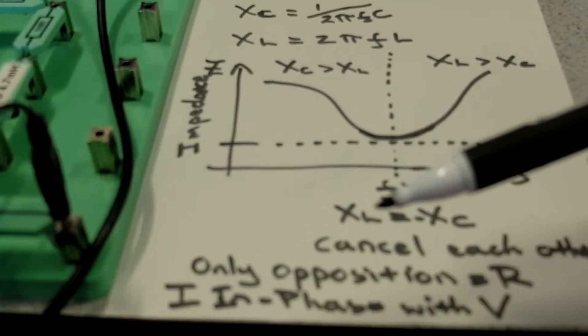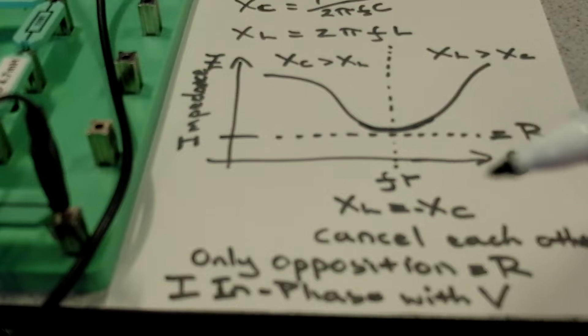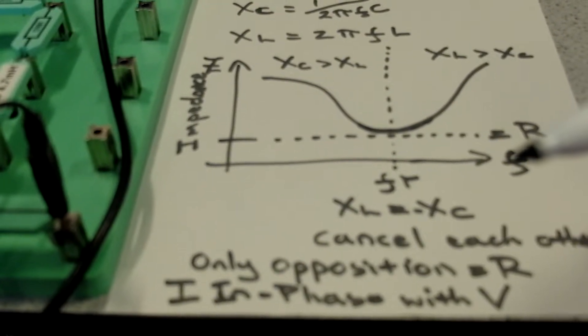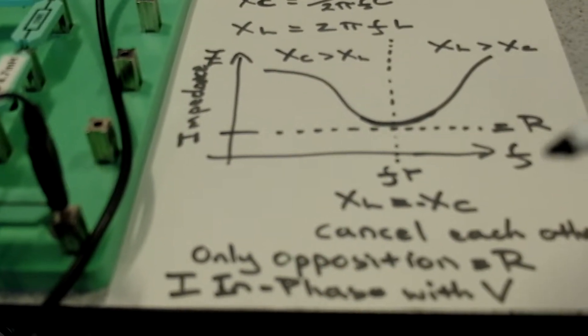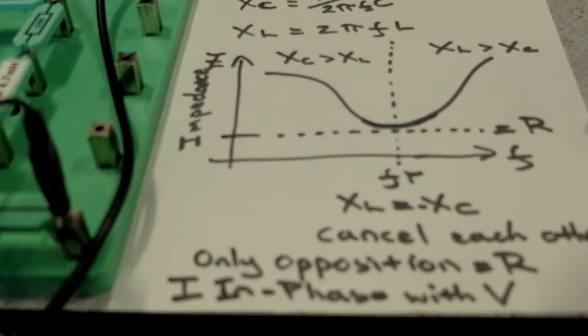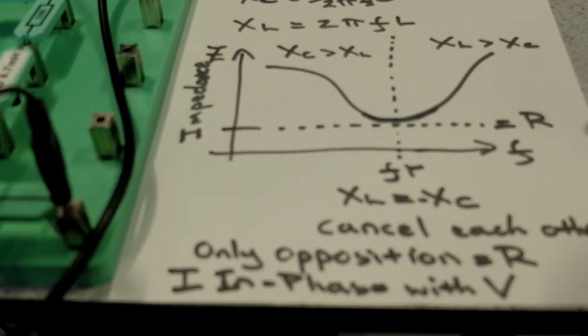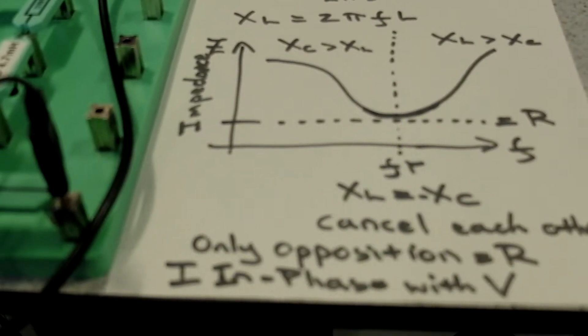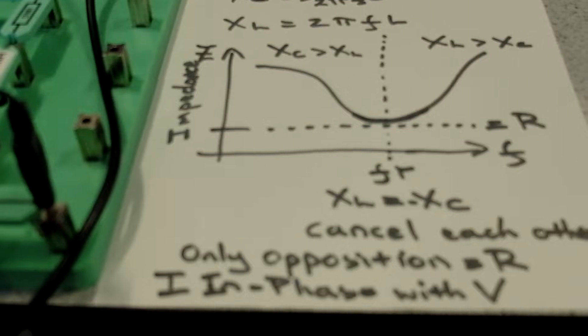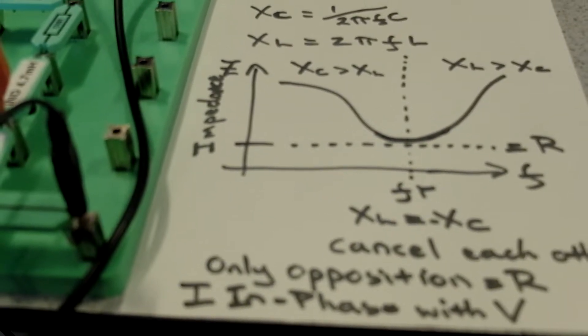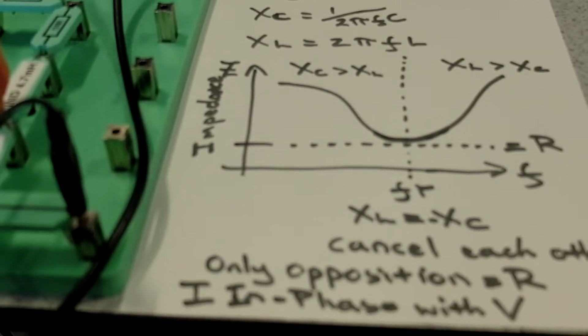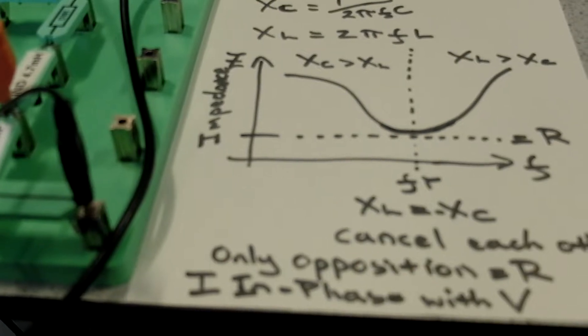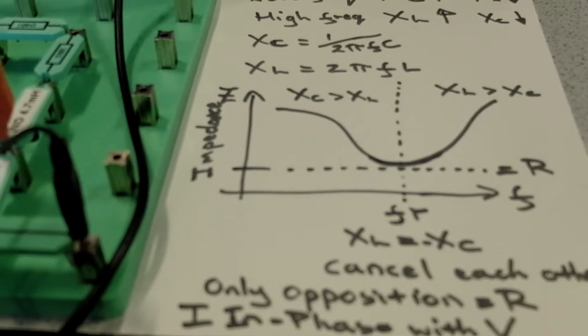Why? When we reach the particular frequency at which XL and XC are the same value, they are always opposite in phase and they cancel each other out. That is resonance — we get a maximum value of current in the circuit and a maximum voltage out of our capacitor, giving maximum response for that particular tuned frequency.